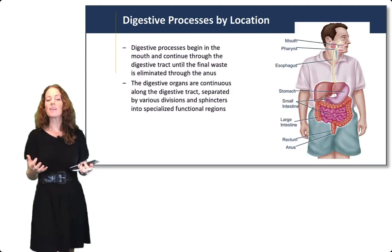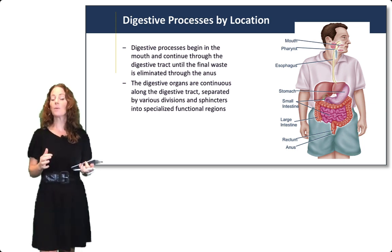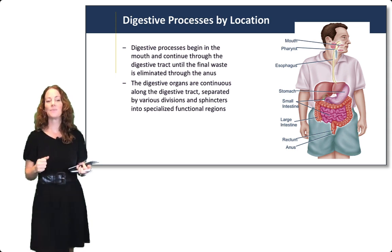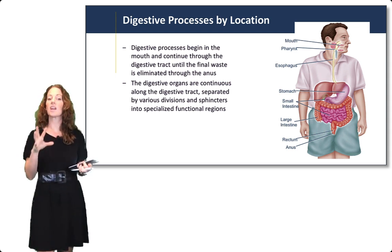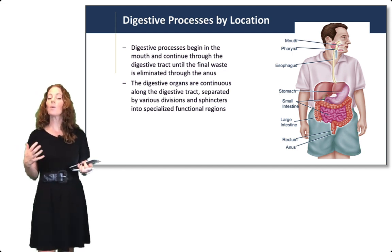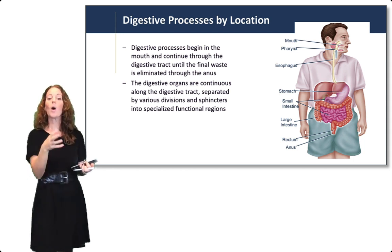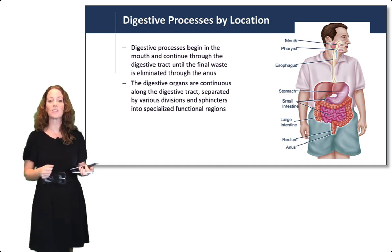We want to look at digestive processes by location. Digestive processes begin in the mouth and continue through the digestive tract until the final waste is eliminated. The digestive organs are continuous along the GI tract, separated by various divisions and sphincters into specialized functional regions, but ultimately a continuous hollow tube open to the environment.